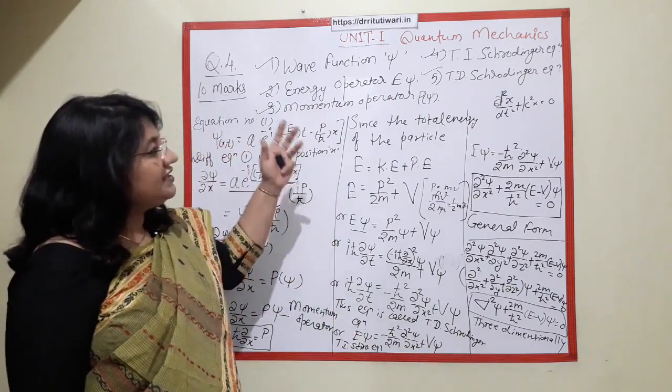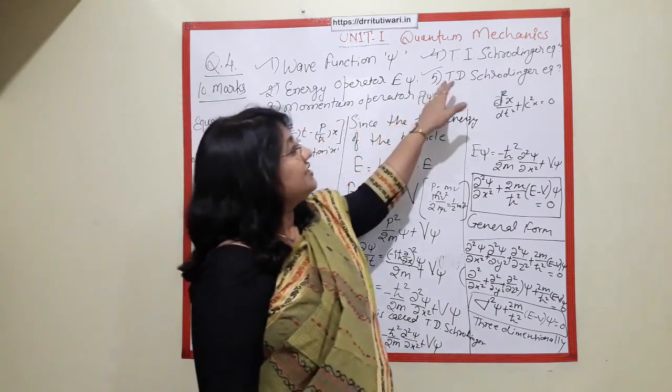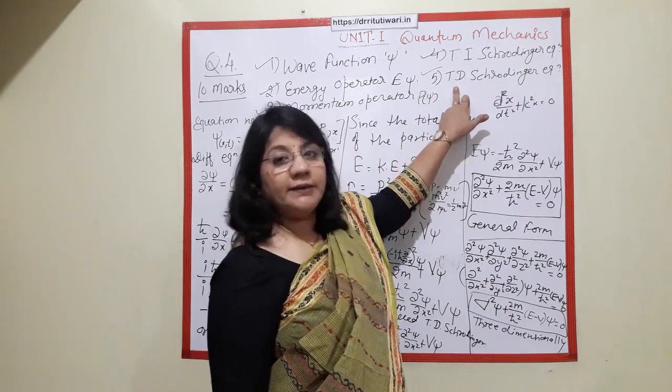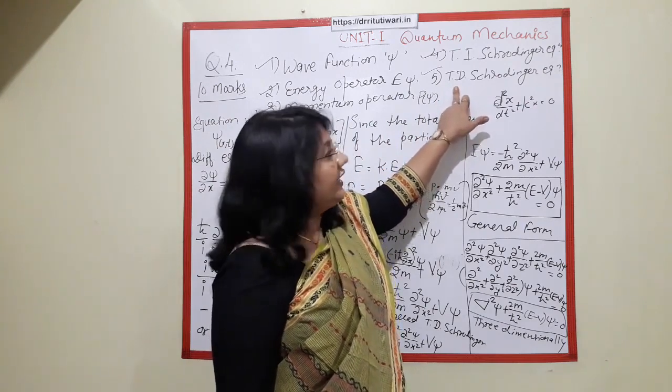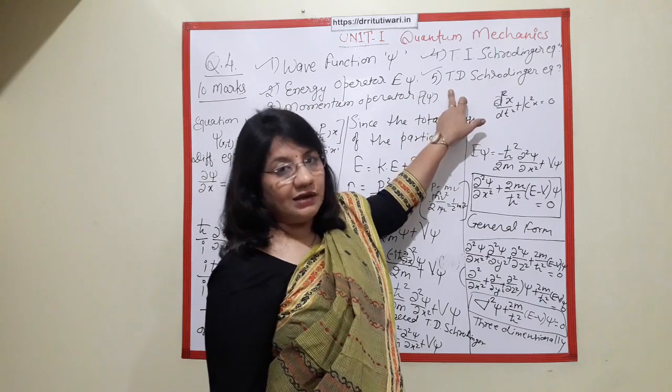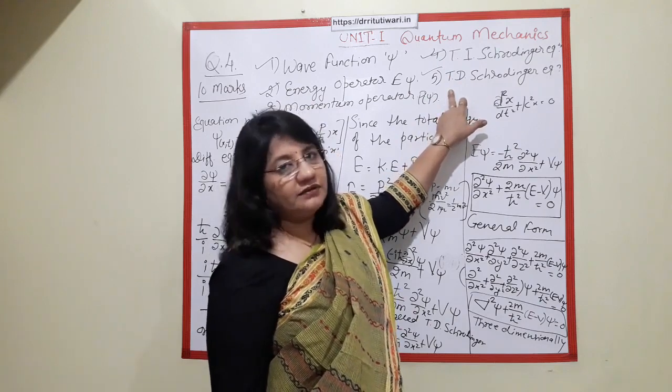But if you are just getting in the form, just derive time dependent equation and time independent Schrodinger equation, then it would be a long form, like 10 marks.